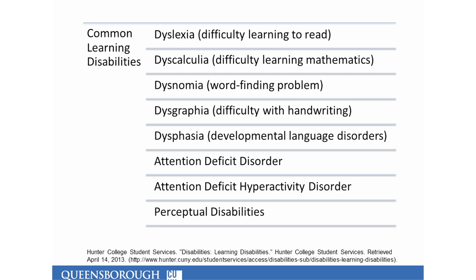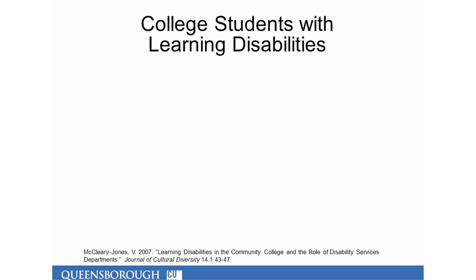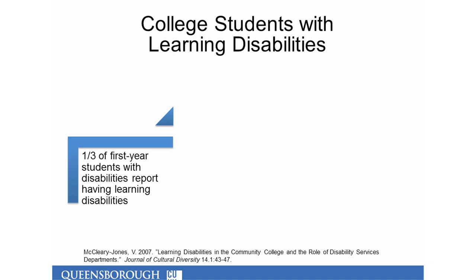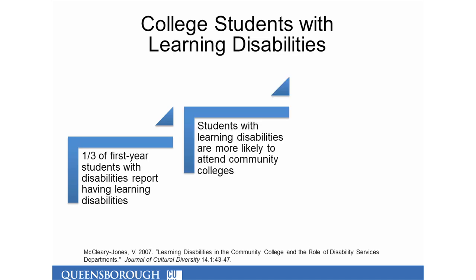Current estimates indicate that approximately 10 to 15 percent of the human population is directly impacted by a learning disability — a significant portion of our student body, and of ourselves quite likely. One-third of first-year college students with disabilities report having learning disabilities; this number has grown by approximately 15 percentage points since 1985, from 15% to 32% of self-reported students with disabilities.